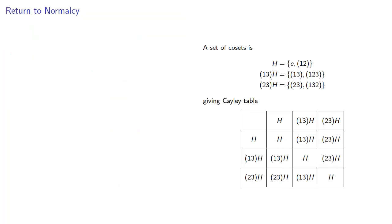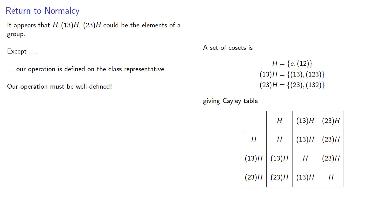And so we've produced the Cayley table, and we observe that it satisfies the Latin square property and we have the identity. And so it appears that H, (1,3)H, and (2,3)H could be the elements of a group, except our operation is based on the class representative. And we have to make sure that the result of the operation is not affected by the representative we choose. In other words, our operation must be well defined.